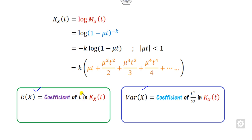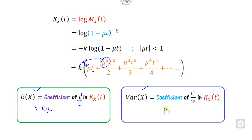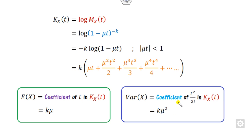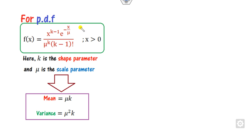From the cumulant generating function, the mean is the coefficient of t to the power 1 divided by 1 factorial, which is k*mu, and the variance is the coefficient of t squared divided by 2 factorial, which is k*mu squared. These match the results obtained from the moment generating function.